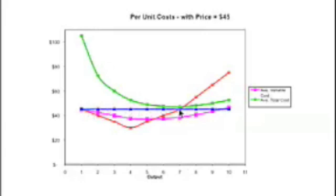Now what we want to do is compare the average revenue, which is $45 in this case, and compare it to the average total cost. And if you look closely, the green average total cost line is above the average revenue. So in this case, we're actually not making a profit. We're making a loss.